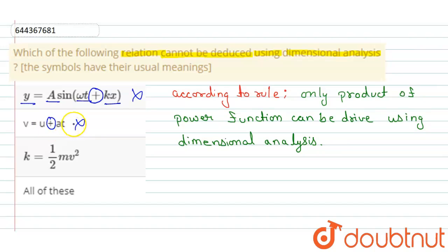So when we check the third option, k equals half mv squared, we can deduce them. But here half creates an issue because this half sign comes from experiment. We cannot deduce it from dimensional analysis.